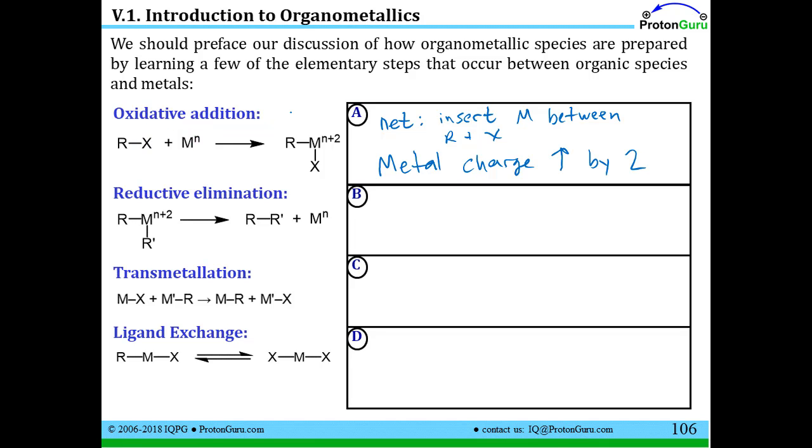Now, the opposite of that process, if two groups were to come off of a metal center and bind to each other, releasing the metal back, well, it's kind of the exact opposite of oxidative addition. Two things come off the metal, and the metal's charge decreases by two. So eliminate two things from the metal, and the metal's charge goes down by two.